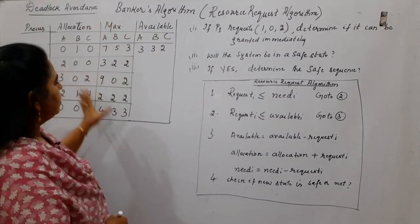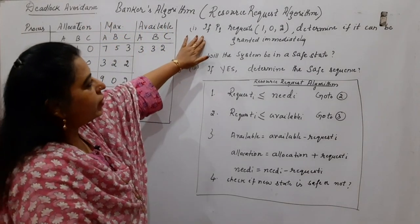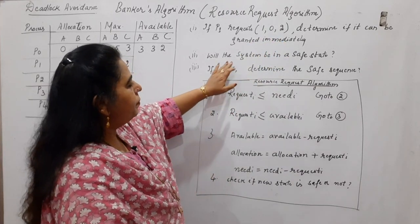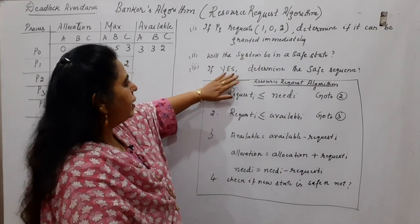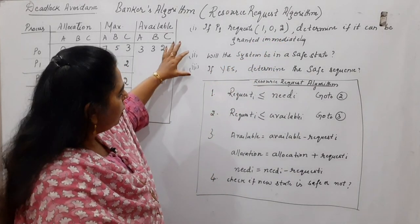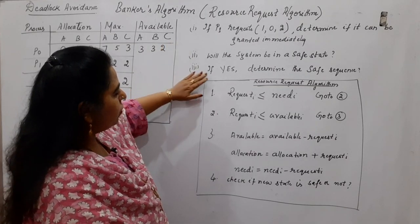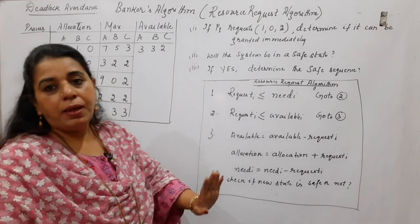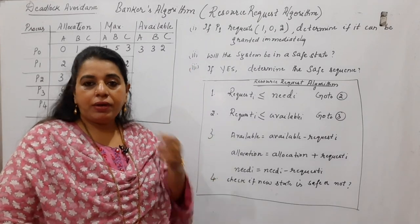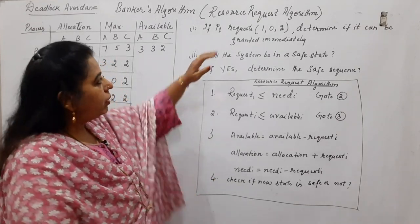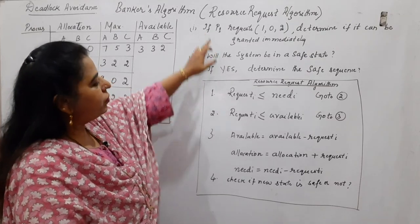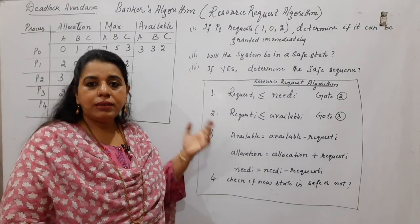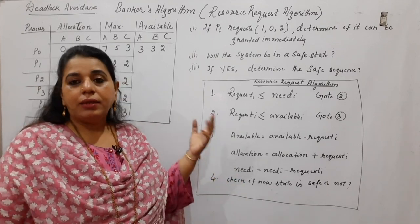Apart from that, the question says: given these values, if P1 requests 1,0,2 — determine if it can be granted immediately. Will the system be in a safe state? If yes, determine the safe sequence. The last two questions are completely under the safety algorithm, which you have learned in the previous session, but to carry out this part you first have to carry out all the steps for the resource request algorithm.